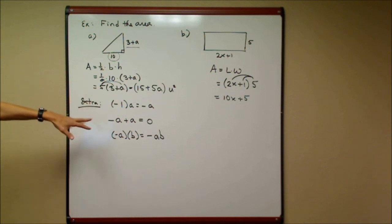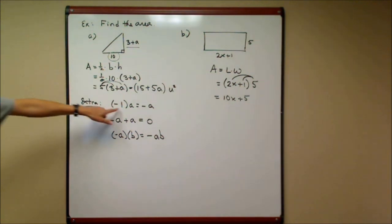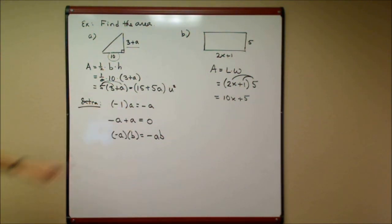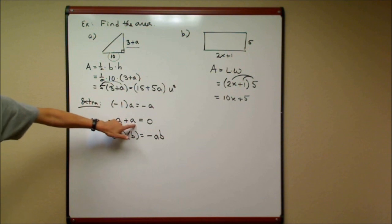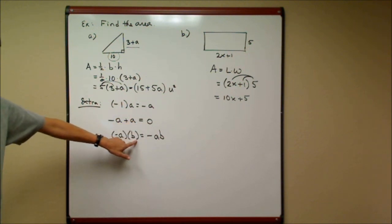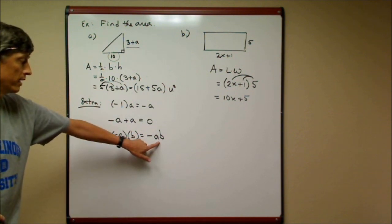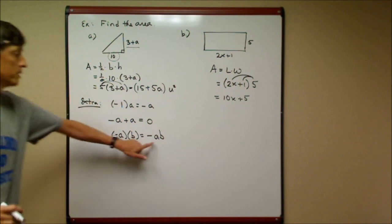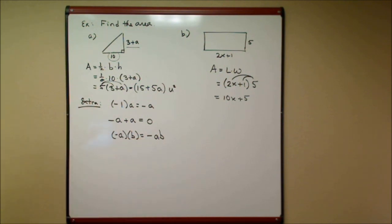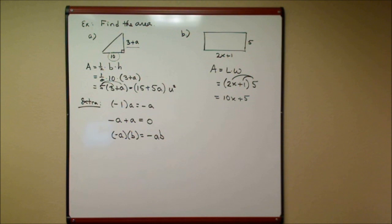A few notes on expressions with variables: negative one times a means the opposite of a. When you add opposites, you get zero — even with variable expressions, the opposite of a plus a is zero. Also, the opposite of (a times b) means the opposite of the entire product, not that both a and b are individually opposites. The distributive property is critically important — you'll use it in pre-algebra, algebra one and two, college algebra, pre-calculus, and calculus. Practice, practice, practice.